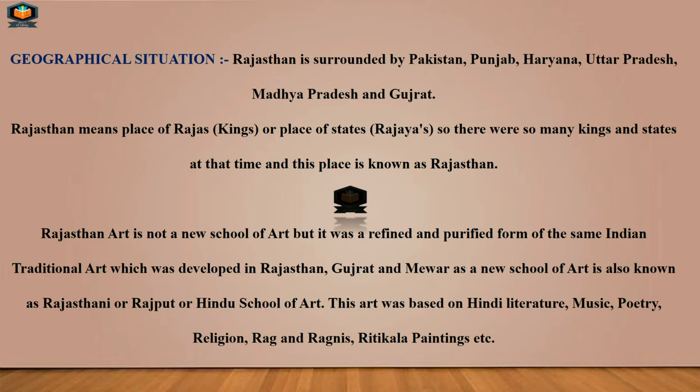Rajasthani school of art is not a new school of art, but it was a refined and purified form of the same Indian traditional art, which was developed in Rajasthan, Gujarat, and Mewaar. It is also known as the Rajasthani, Rajput, and Hindu school of art.